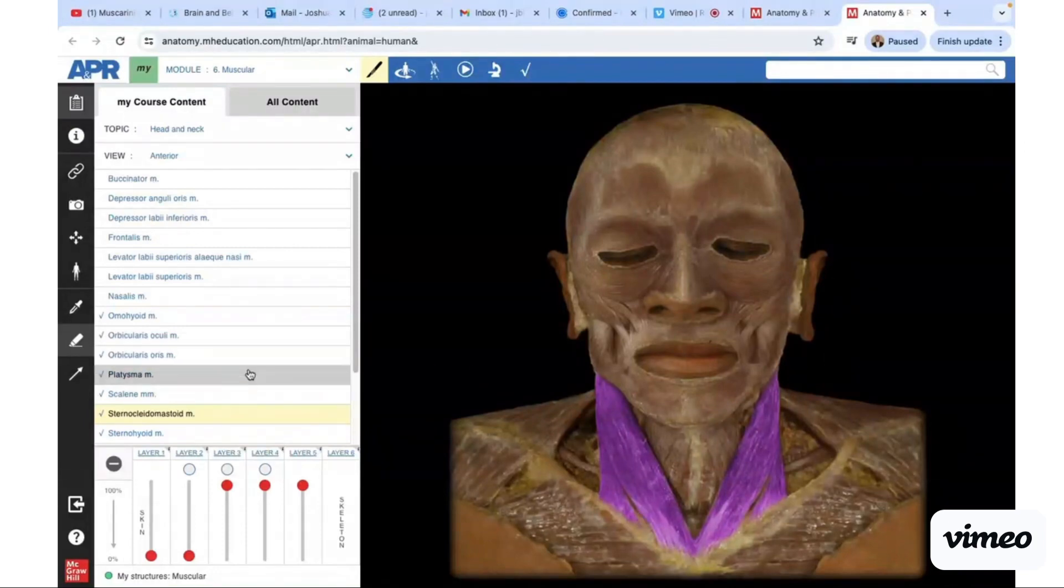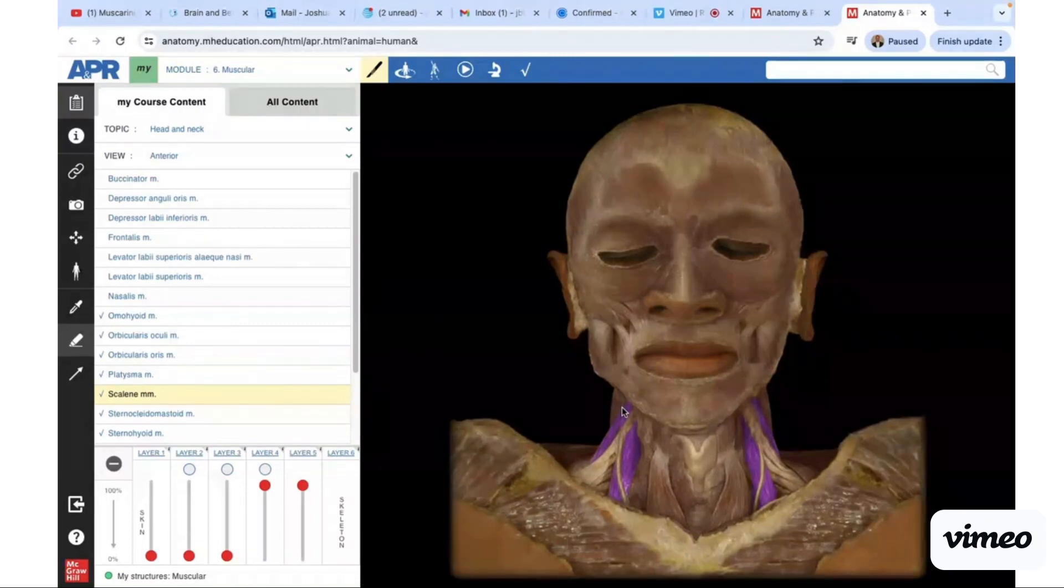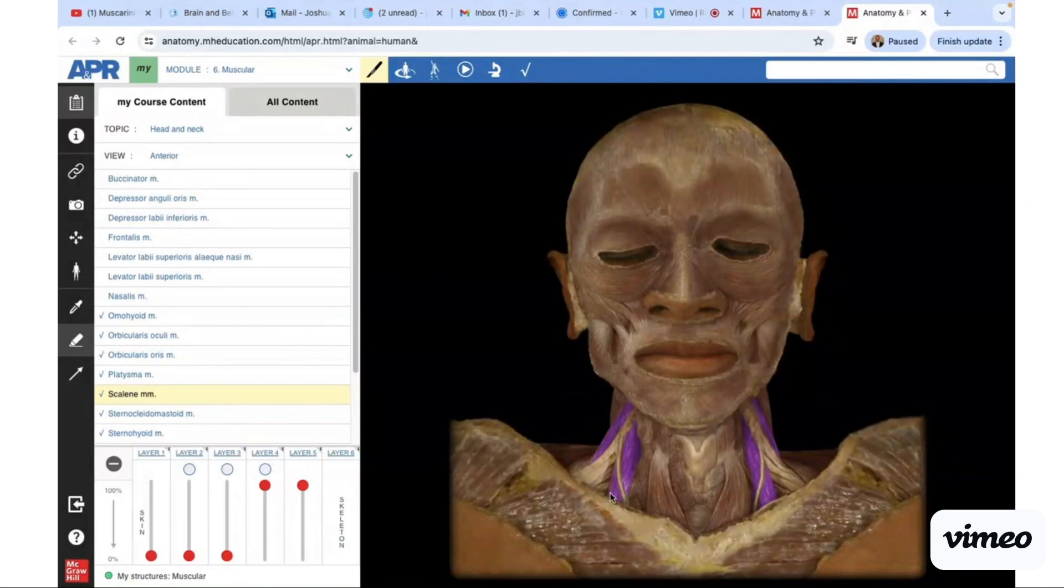Let's get rid of the sternocleidomastoid and look at the scalene muscles. The scalene muscles originate from the transverse processes of C3 through C7 collectively, and then they insert—the anterior and middle scalene insert on the first rib, and the posterior scalene will make it to the second rib.